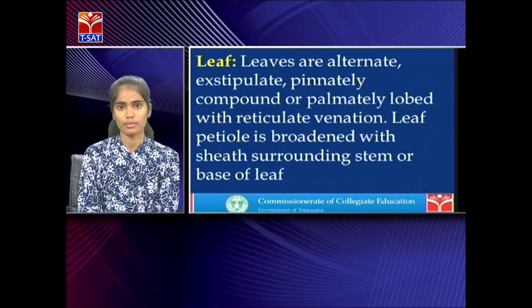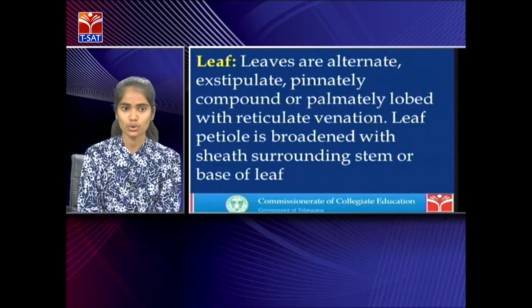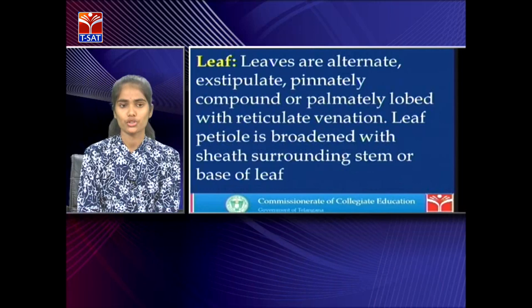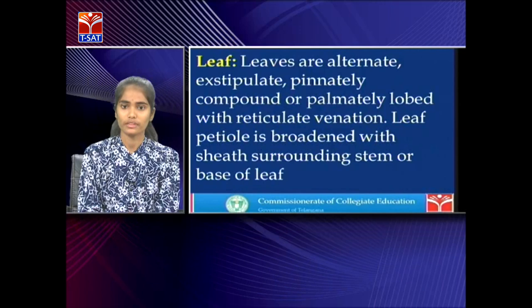The leaves of Apaceae are alternate, exstipulate, pinnately compound or palmately lobed with reticulate venation. Alternate means arranged on the leaf axil alternately; pinnately compound means leaflets arranged in two rows on a common axis; palmately lobed means three leaflets on a common axis appearing like a fan. Reticulate venation means veins are arranged in a network. The leaf petiole is broadened and wide, with a sheath covering around the stem base.